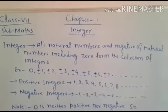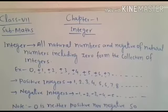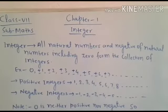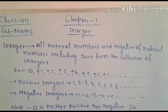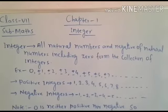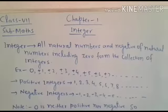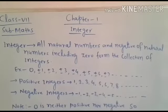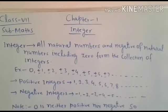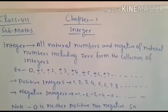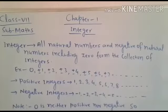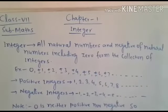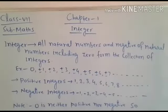So without wasting our time, let us start our topic — integers. So we have the definition here: integers are all natural numbers and the negatives of natural numbers, including zero, which form the collection of integers.